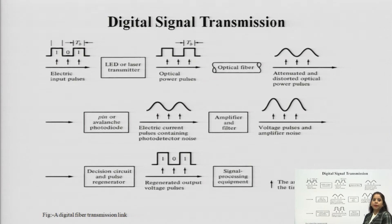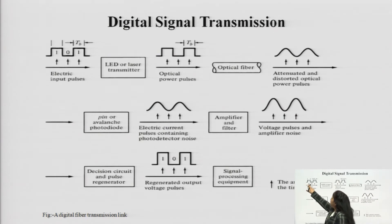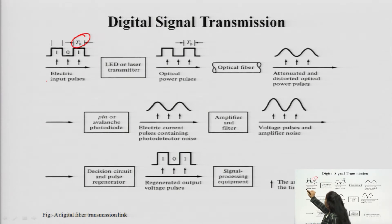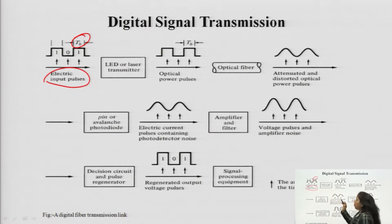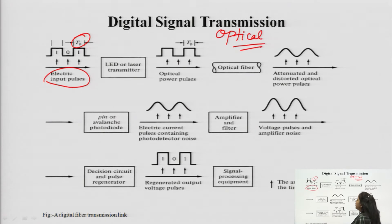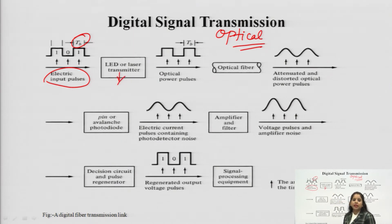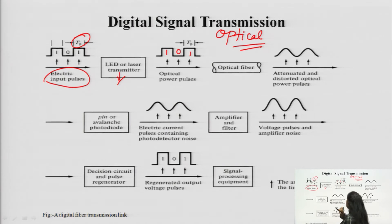Now consider an example of digital signal transmission from transmitter to receiver. Different pulses with bit period T_b are shown — the input is a 1-0-1 electrical input pulse. For optical signal transmission, this electrical signal must be converted into an optical one. An LED or laser performs this function, converting the electrical signal into optical power pulses. The signal remains 1-0-1 but is now an optical power pulse.